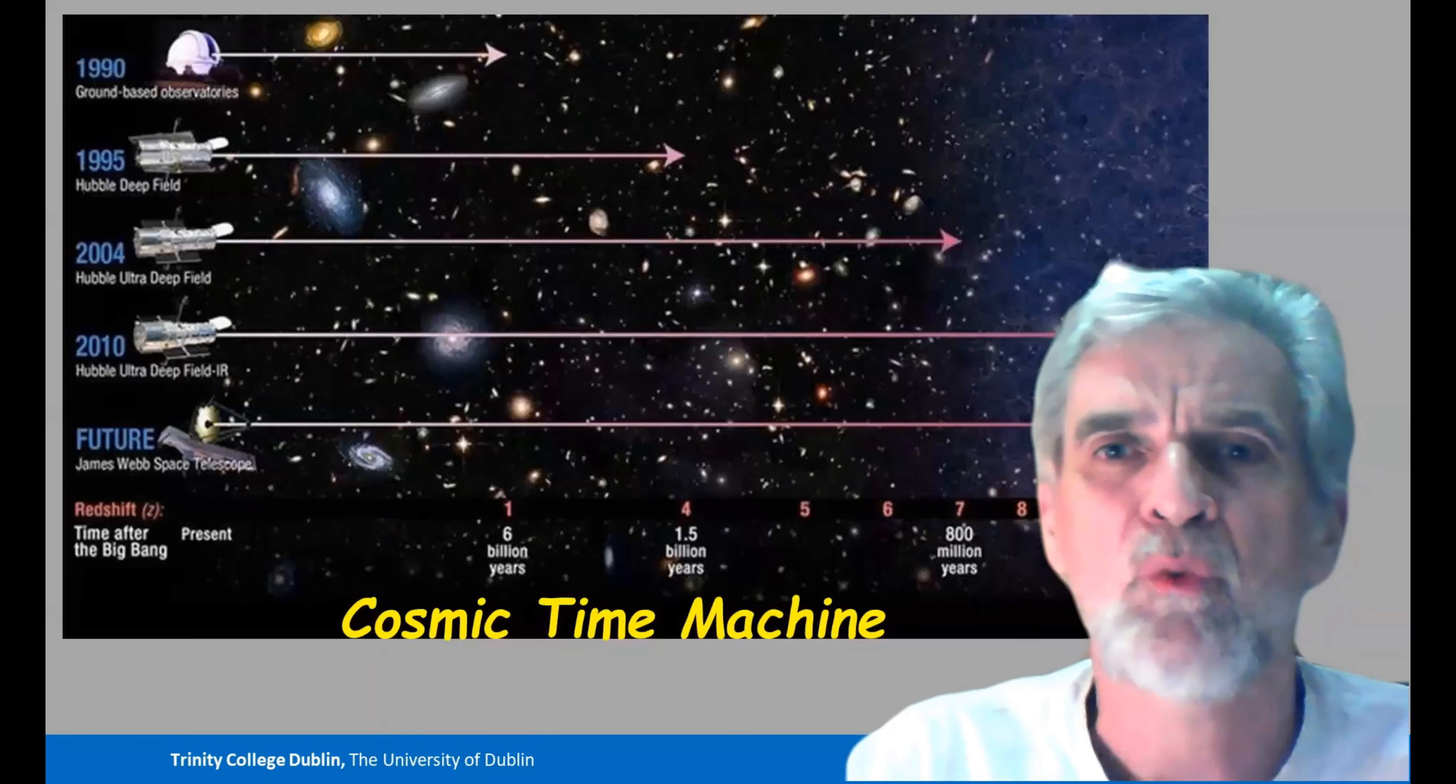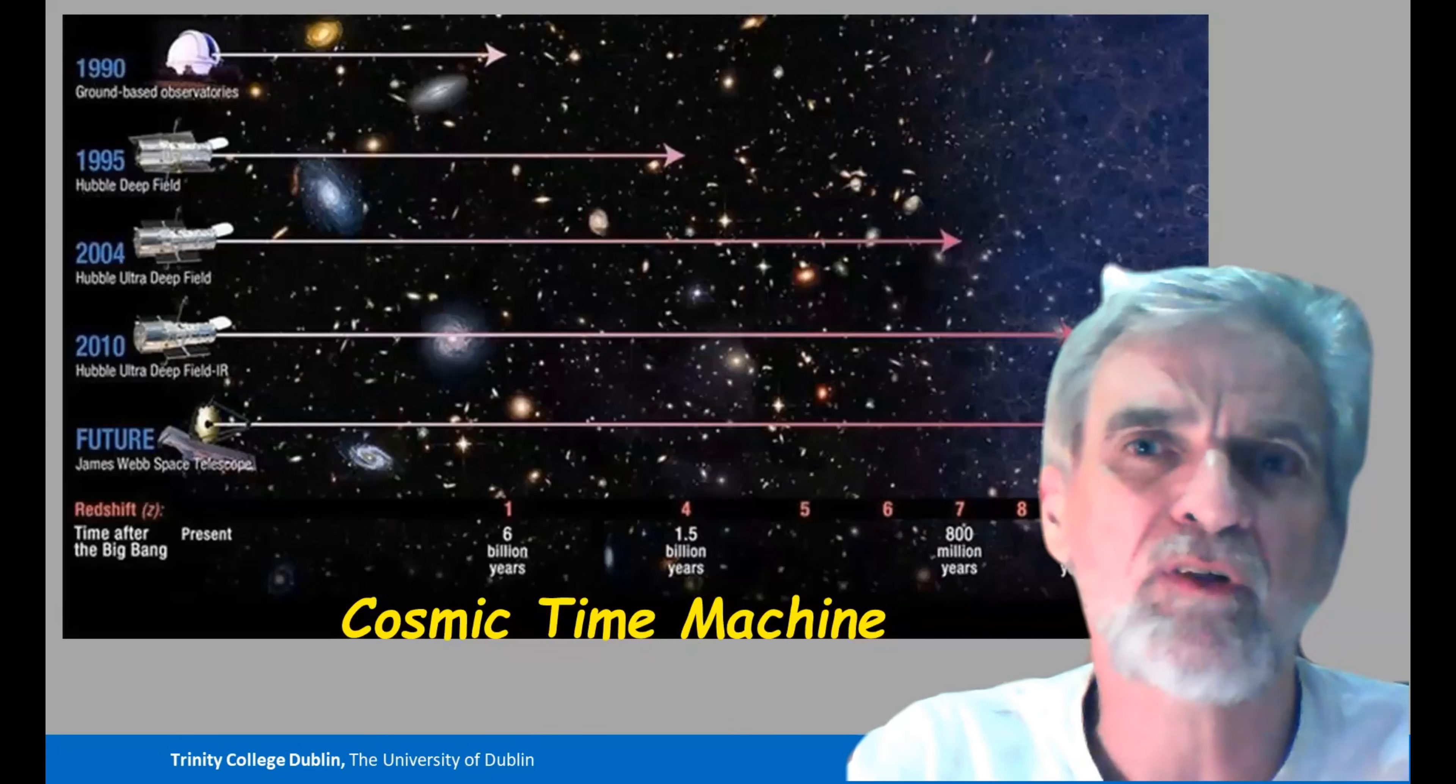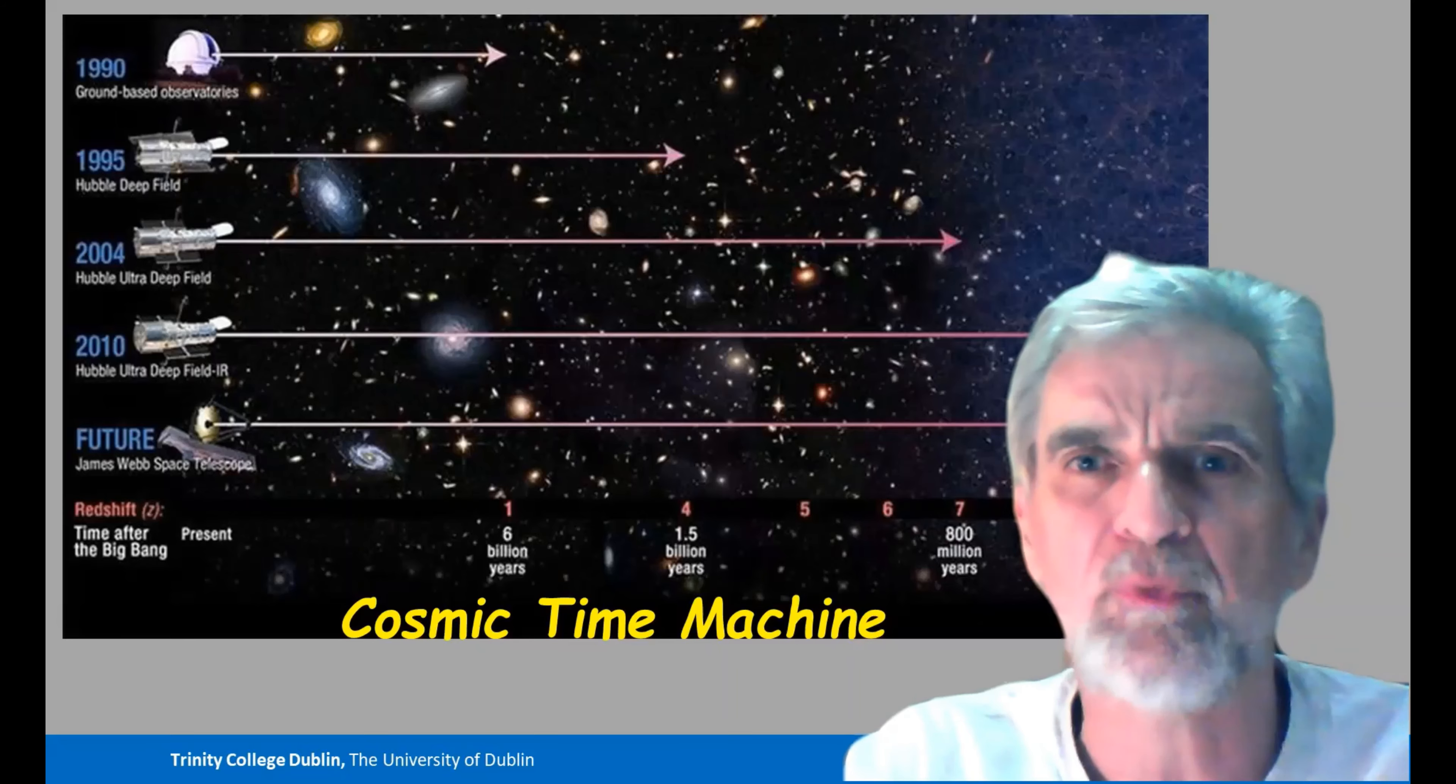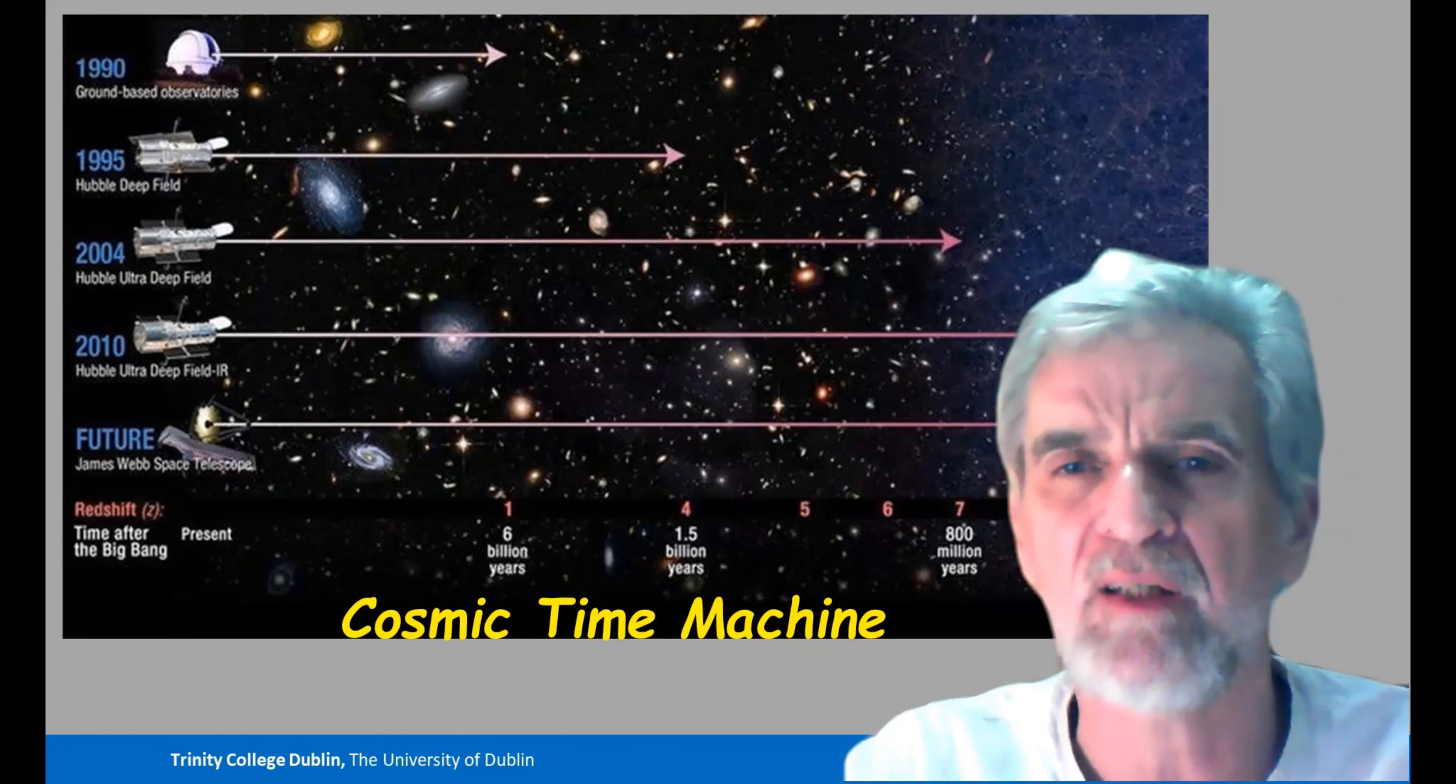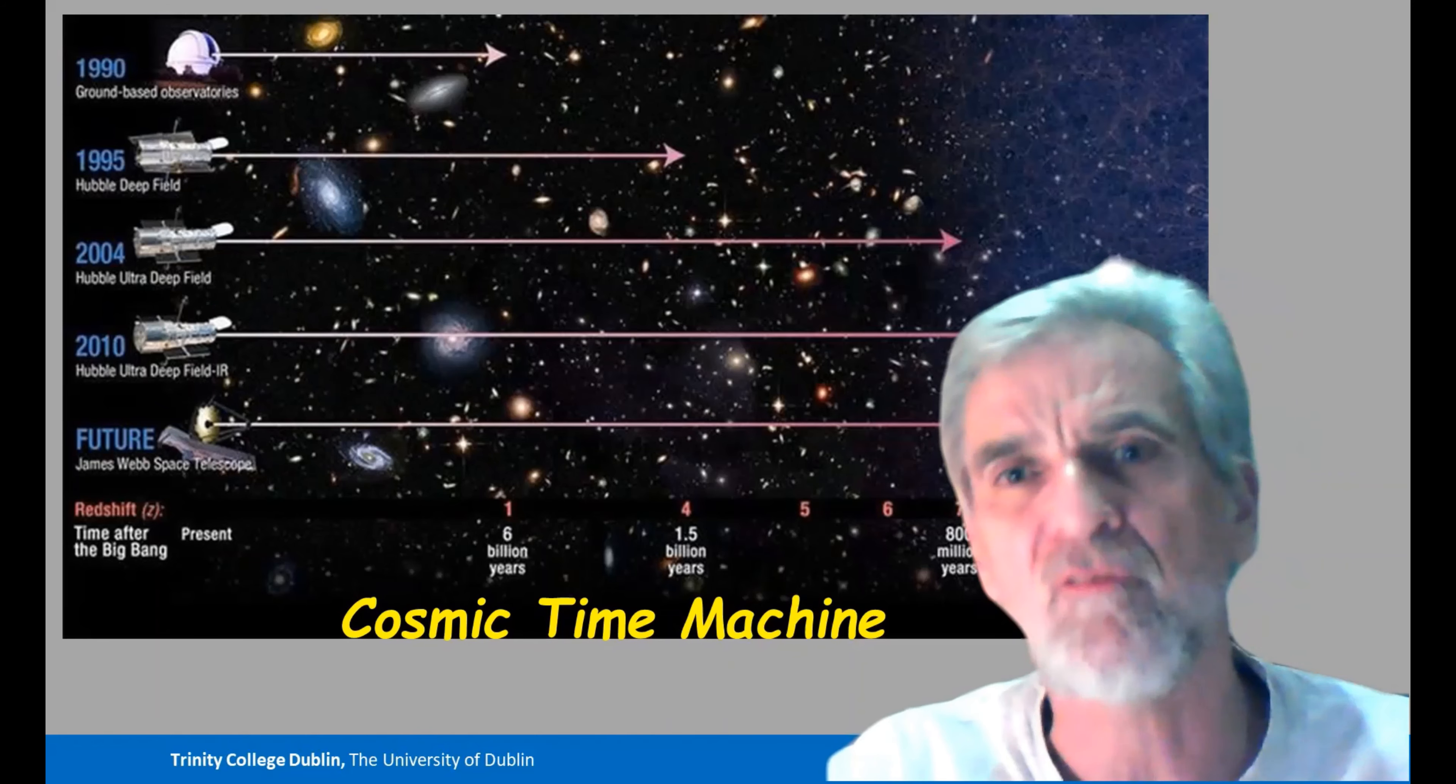And what's that going to do for us? Well, as we look to fainter and fainter objects, we can probe to larger and larger distances. Because of the finite light travel time, of course, that means we're looking at older and older light, or conversely,